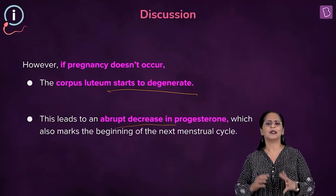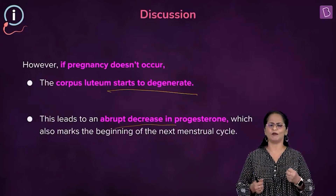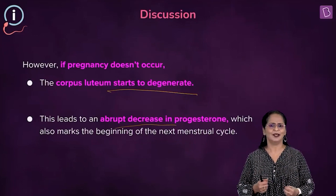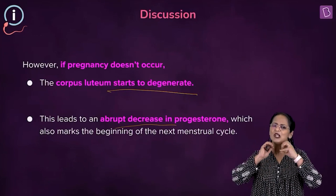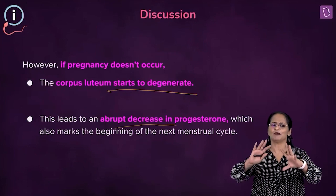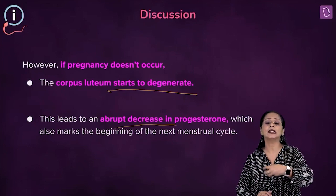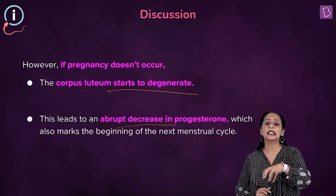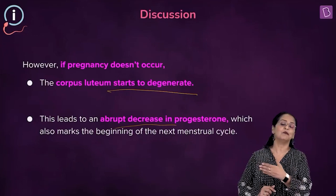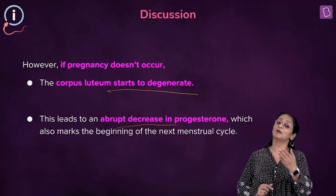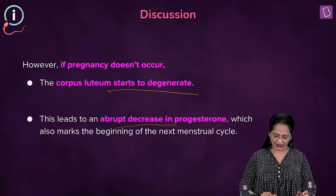When progesterone drops, the endometrium — which was getting ready for a possible implantation — starts peeling off from the uterine wall and gets discarded. This marks the beginning of the menstrual phase, or the bleeding phase of the menstrual cycle.